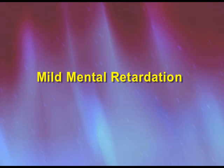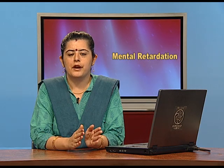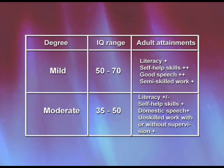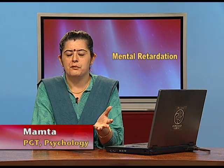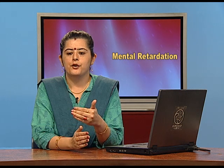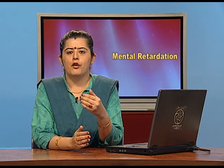The first category is mild mental retardation, with an IQ range of 50 to 70. In this category, the person is still educable — they can progress to around class 4th or class 6th, meaning education can continue up to that level.